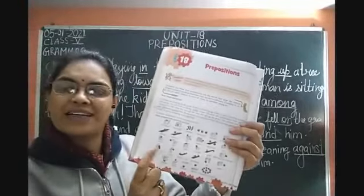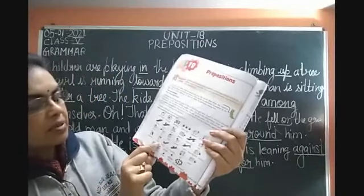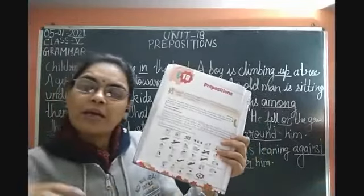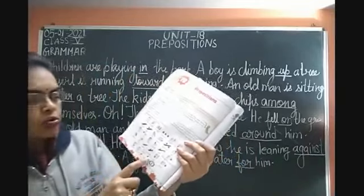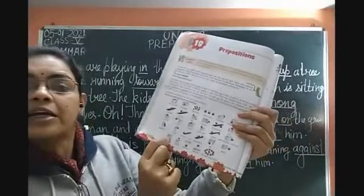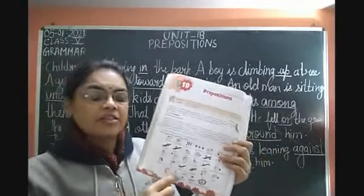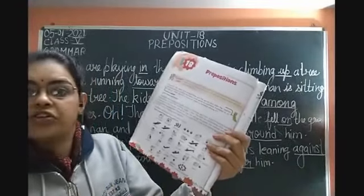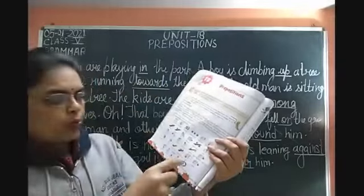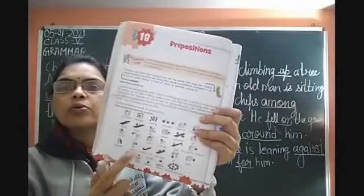Against means tik ke sahare se — leaning against something. Over is when something crosses from above. From and to — ek jagah se dousri jagah ke liye 'from' and 'to.' Towards — us taraf jane ke liye. At — koi particular place pe. Near — paas mein. Under — neeche. Over — upar. Below aur under mein difference: below matlab thoda neeche, under matlab ekdam neeche. Over and above mein: above thoda upar, over aur upar. Round means charo taraf.